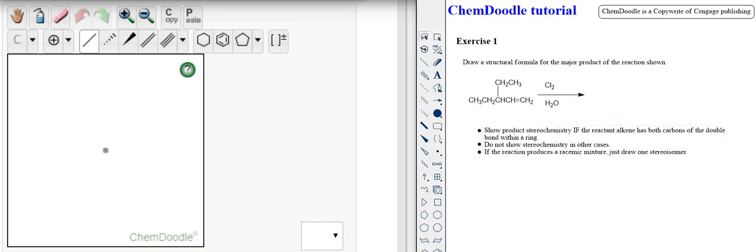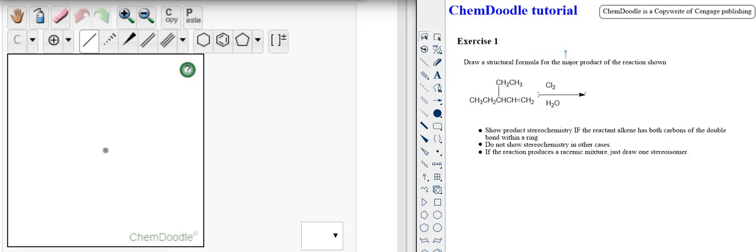I've invented this question. We're supposed to draw the structural formula for the major product of this reaction. Here's the alkene that we have to focus on. Show product stereochemistry if the reactant alkene has both carbons of the double bond within a ring. In this example there's no ring so we don't show stereochemistry. And if the reaction produces a racemic mixture I'm just supposed to draw one isomer.